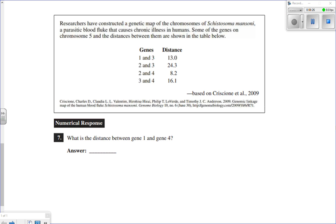Let's look at one more example. So here we've got a gene map of chromosomes of Schistosoma mansoni, I don't even know what that is, it's some sort of blood fluke that causes chronic illness. Some of the genes on chromosome 5 and the distance between them are shown in the table below. So this isn't all the genes, but this is genes 1, 2, 3, and 4. So I'll go ahead and do this the way I've done the others. I'll make my number line, my hypothetical chromosome. And I can see that the longest distance I have here is 24.3, 24.3 between genes 2 and 3. So I can put gene 2 at one end of the chromosome, gene 3 at the other, and my distance between them is 24.3.